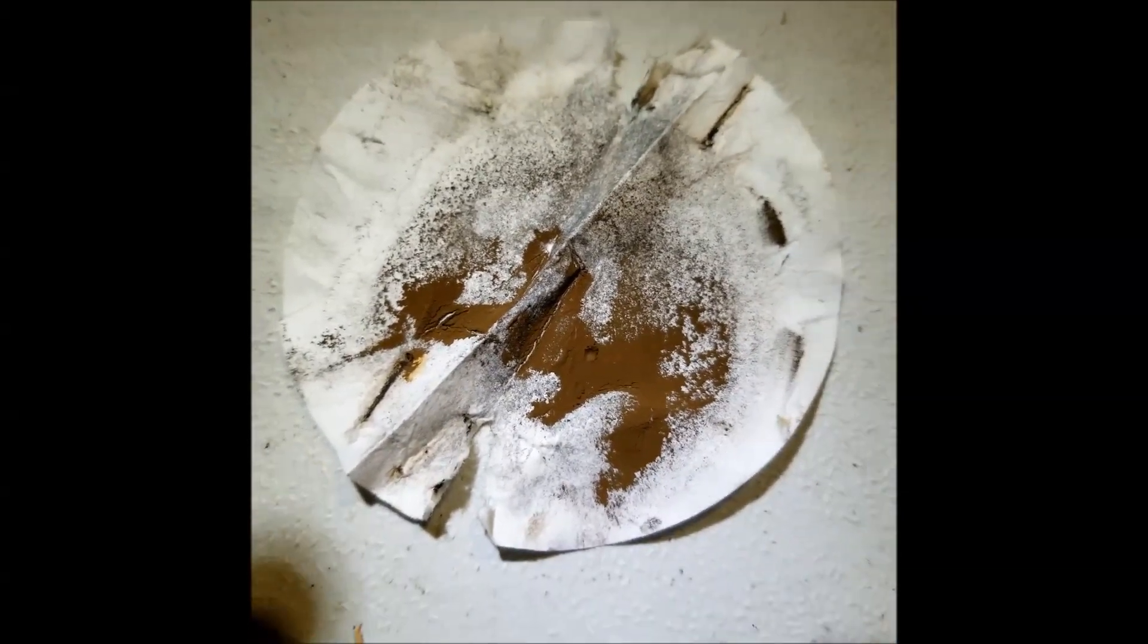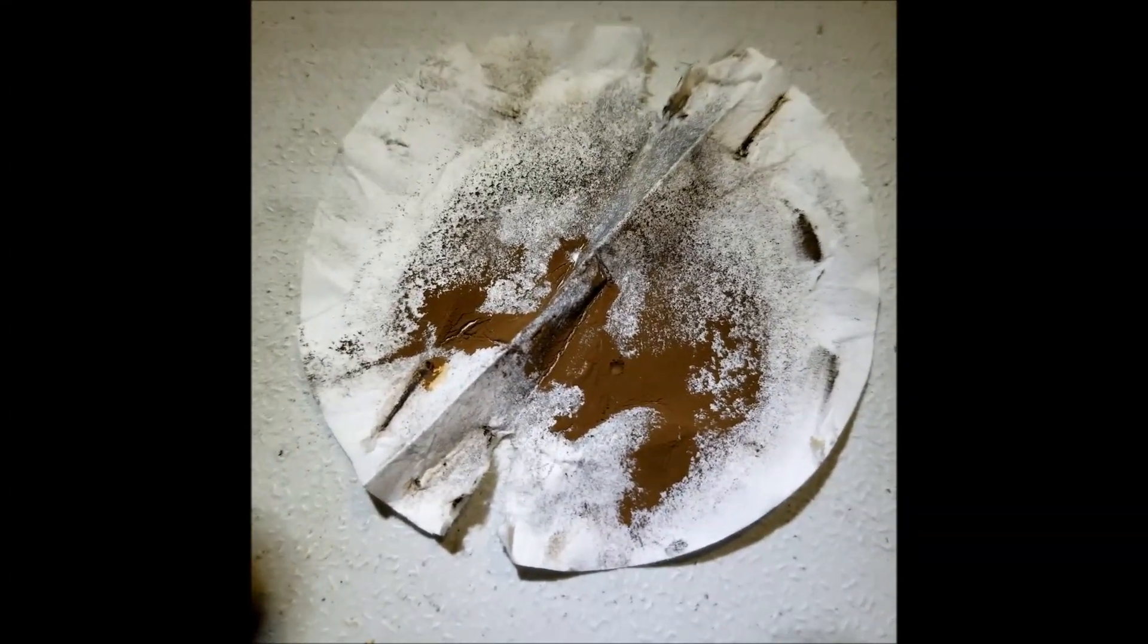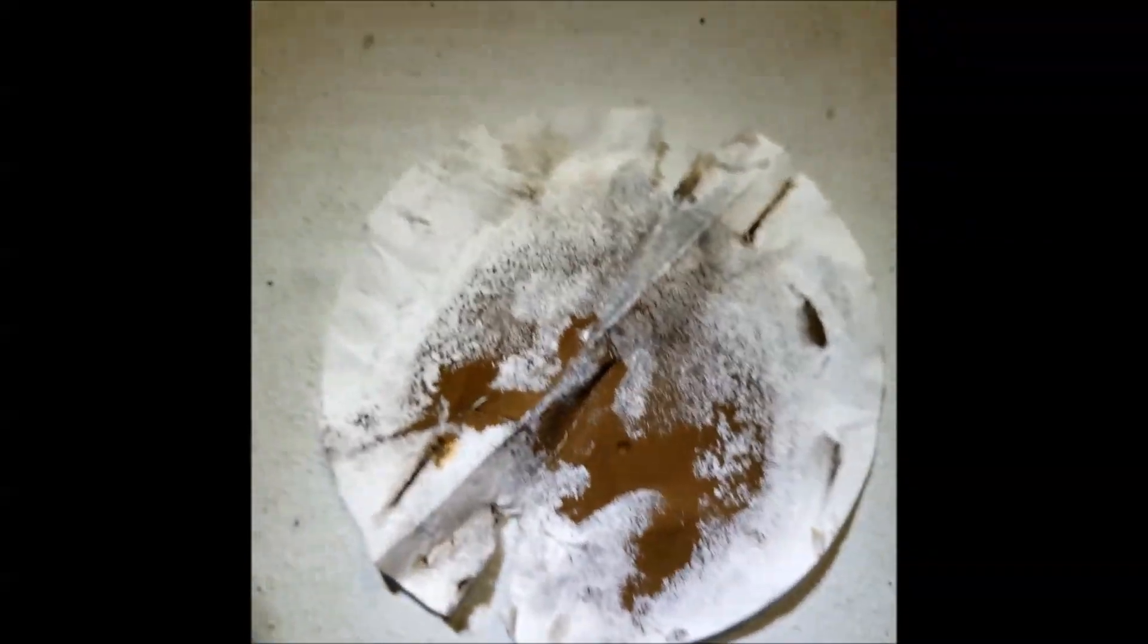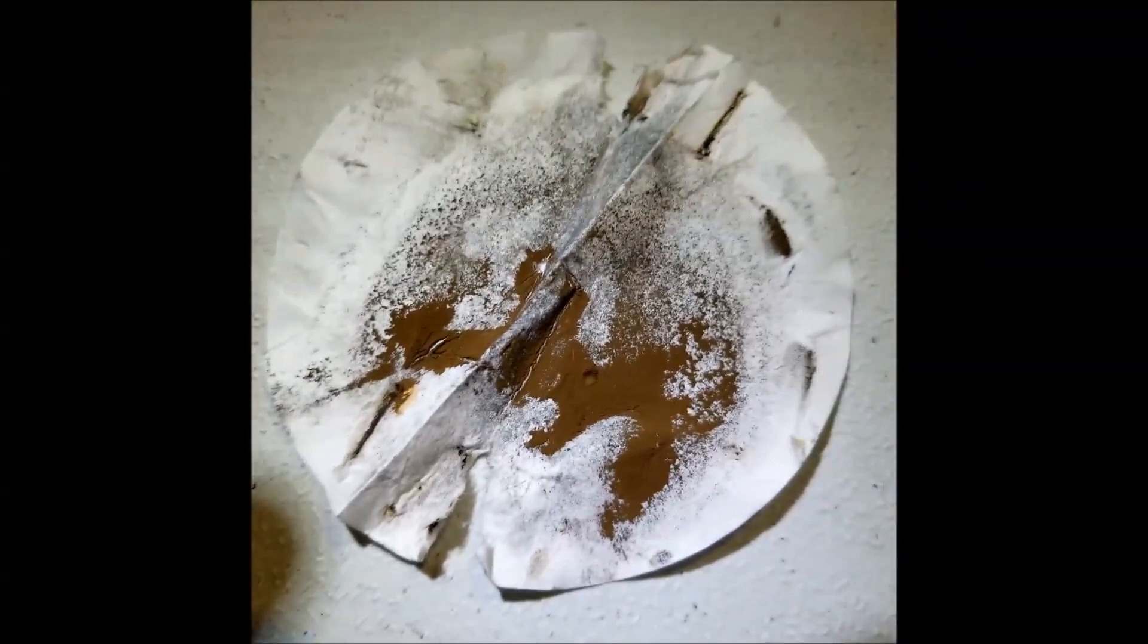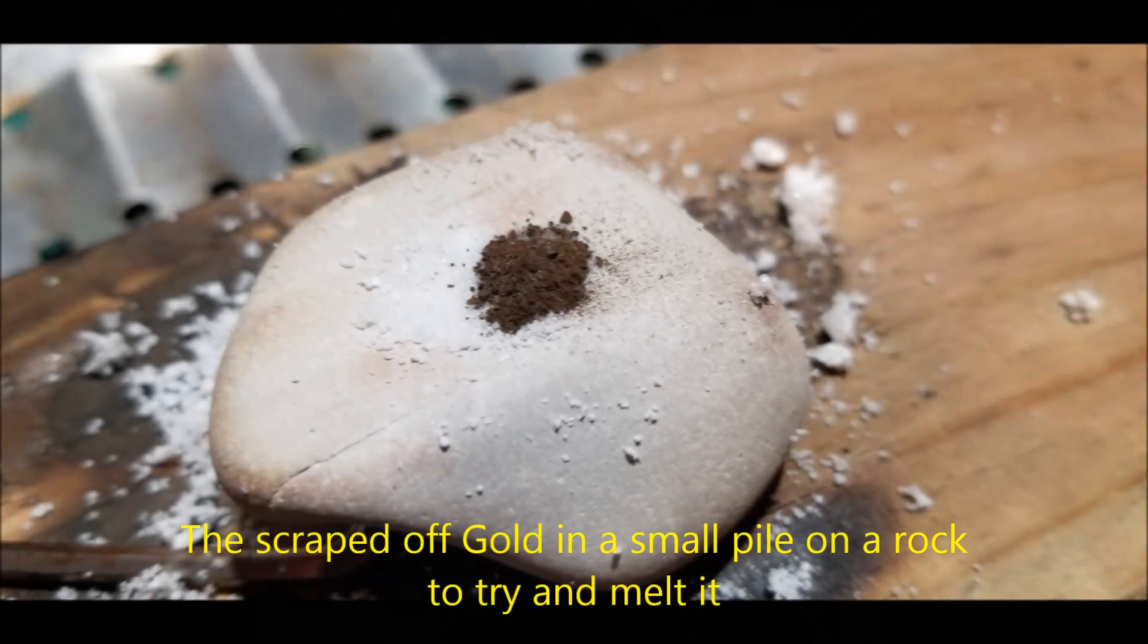This is going to be scraped off and then melted together to make a little gold bead. Interestingly, the mix of the aqua regia and the sodium metabisulfite that we did last melted a hole right through this. Pretty amazing. Strong stuff.